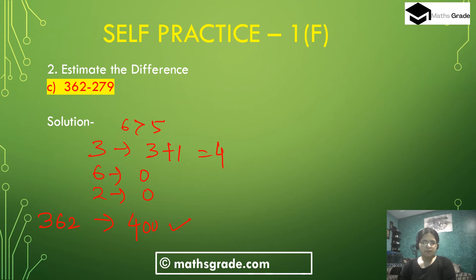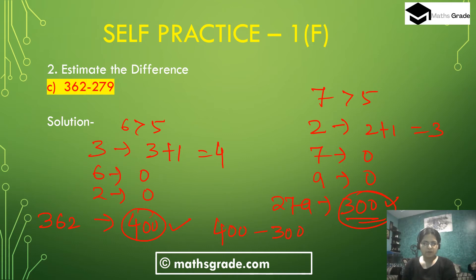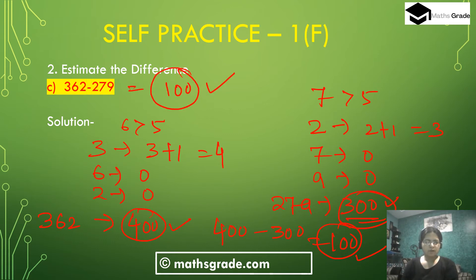Now 279: the tens place digit is 7, and 7 is more than 5, so add 1 to the hundreds place digit. 2 changes to 3, the tens digit 7 changes to 0, and the units digit 9 changes to 0. So 279 rounded to the nearest hundred is 300. Therefore, 400 minus 300 is 100, and 100 is the answer. So estimating the difference of 362 minus 279 is 100.